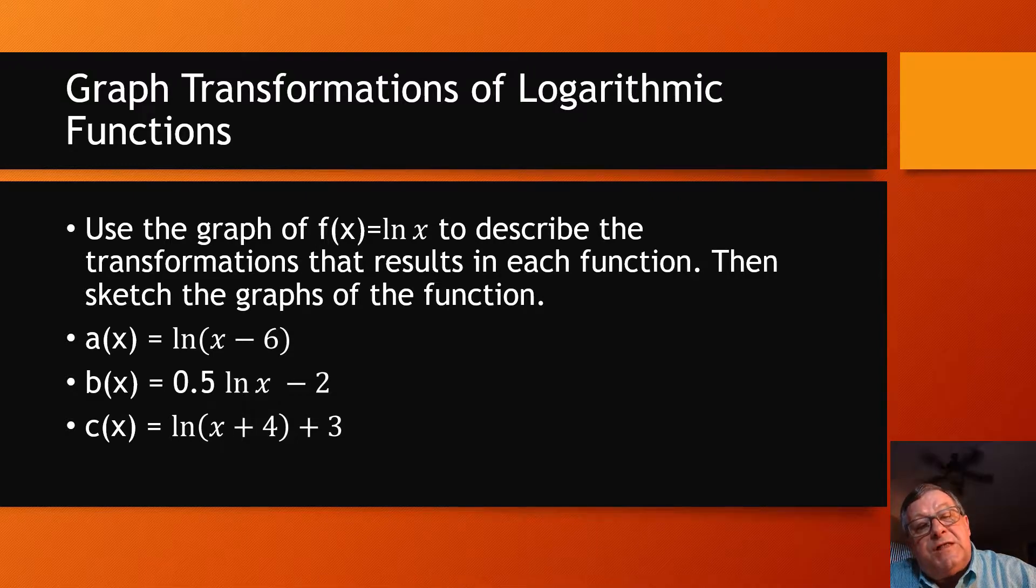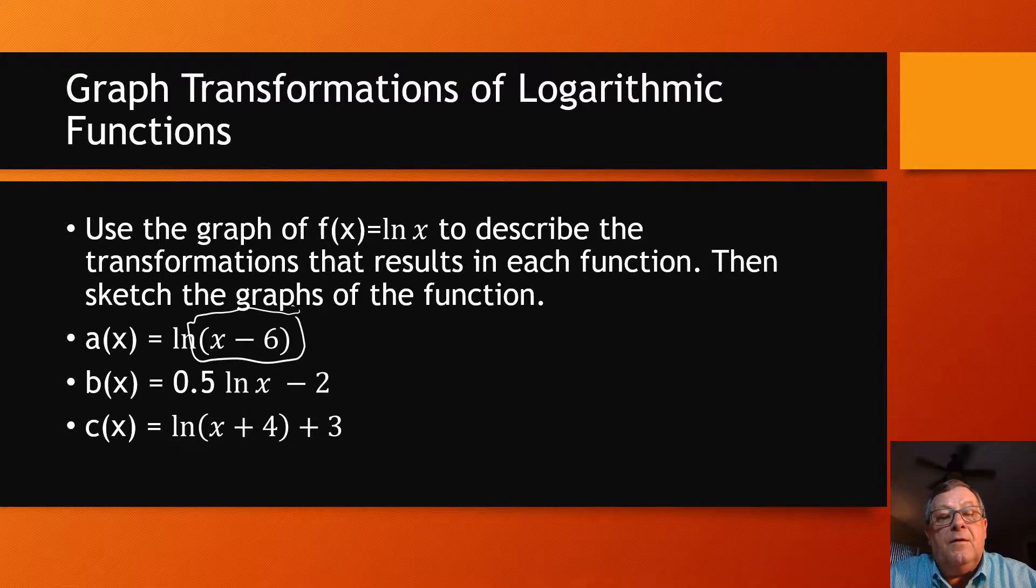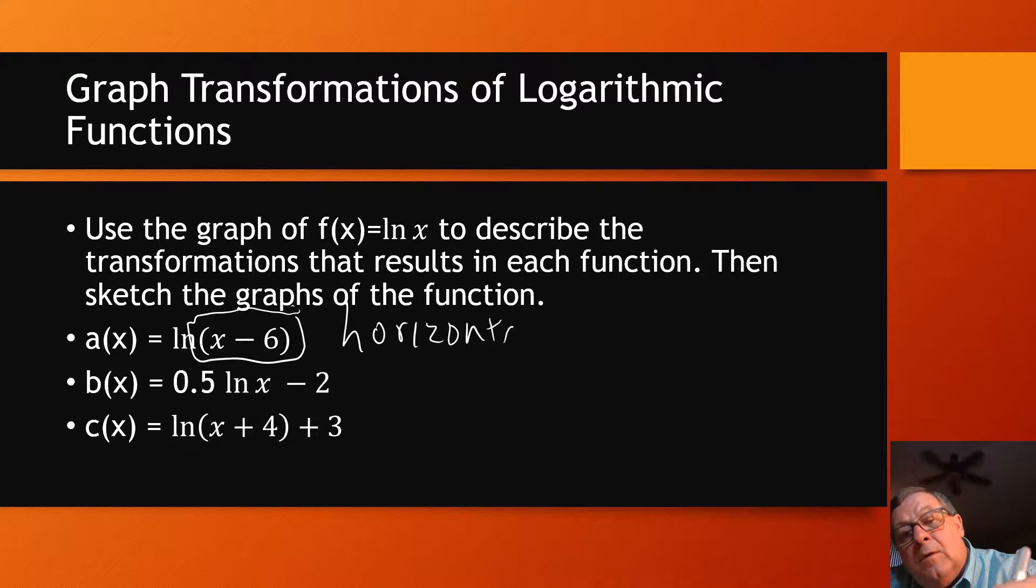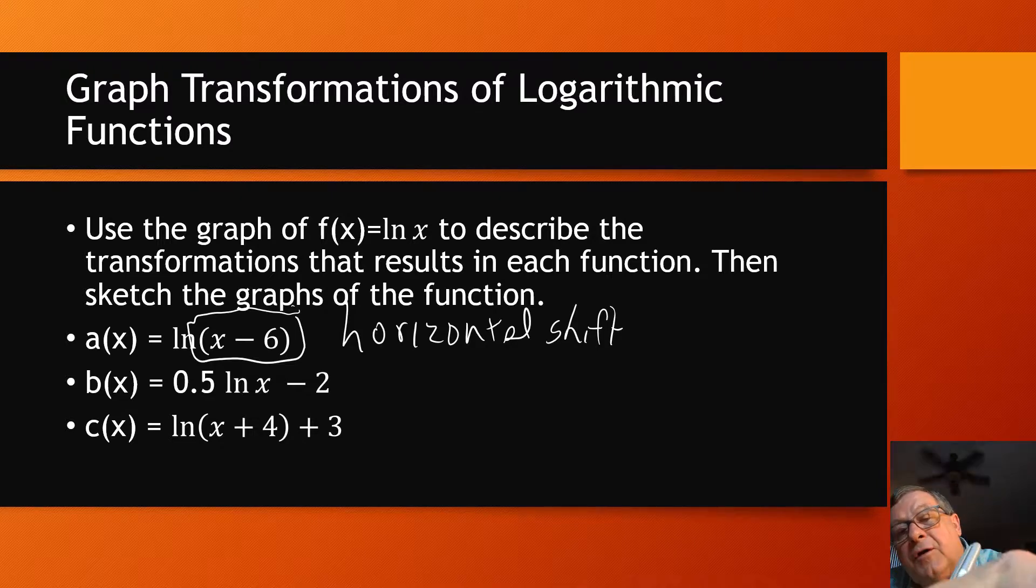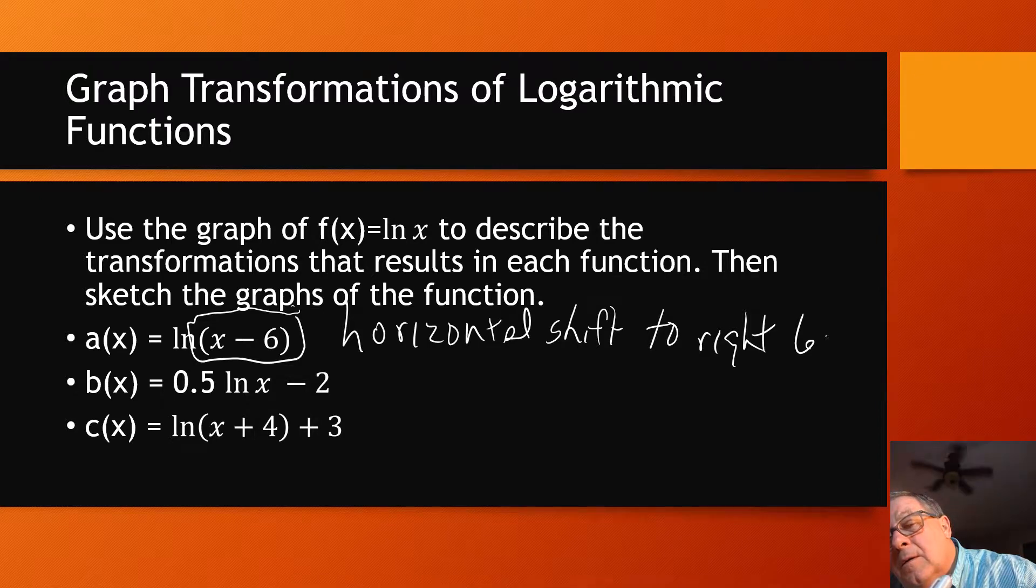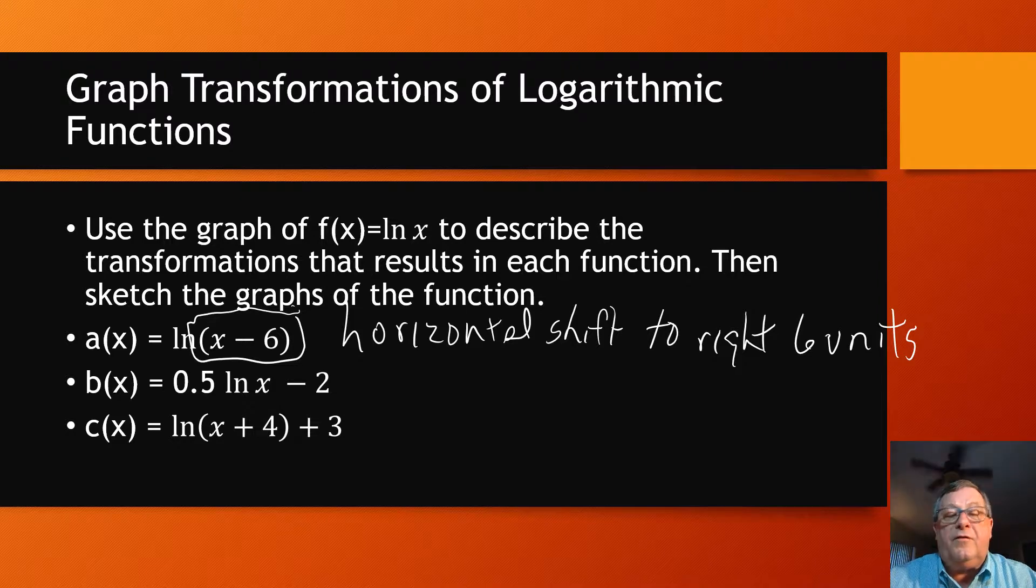Now, the fact that this negative 6 is in the parentheses would indicate that I'm going to have a horizontal shift. And it's a negative 6. So I'm going to have a horizontal shift to the right 6 units. And it's just like any other transformations we've seen. When we see it inside the parentheses, we see a horizontal shift.